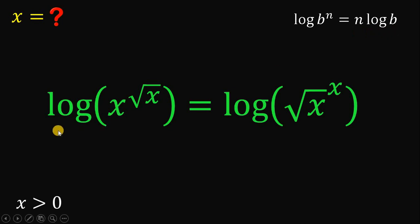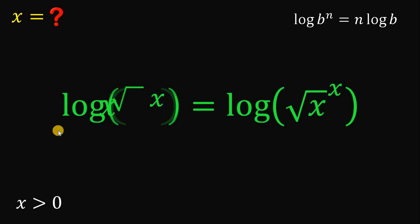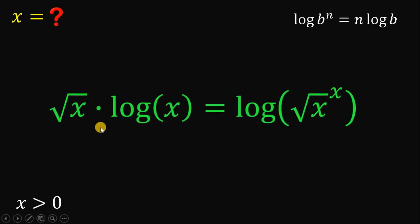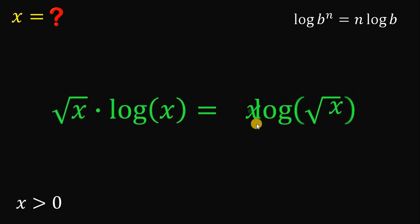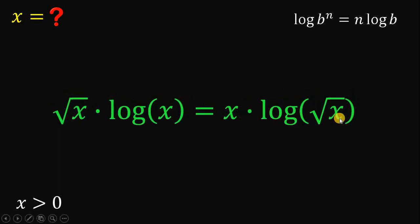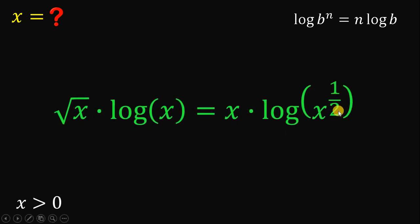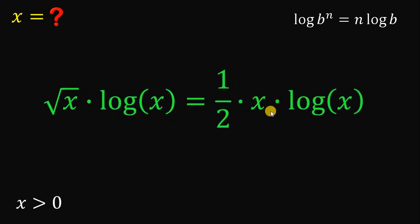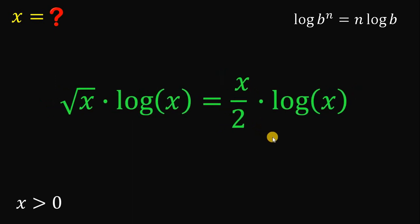Therefore, the left-hand side of our equation can be written as square root of x multiplied by logarithm of x. On the right side, this can be written as x multiplied by logarithm of square root of x. Take note that square root of x can be written as x raised to 1/2, so we can apply this identity again. Therefore, this becomes 1/2 times x times logarithm of x, which simplifies to x over 2 times logarithm of x.